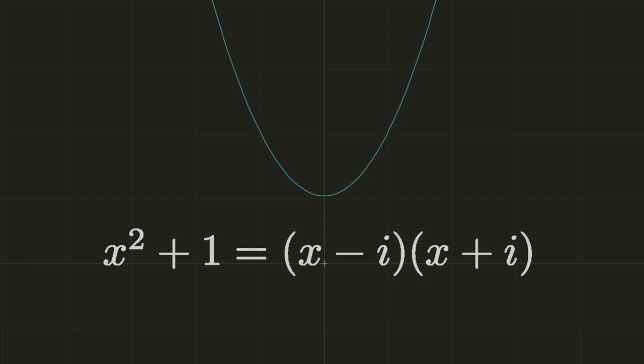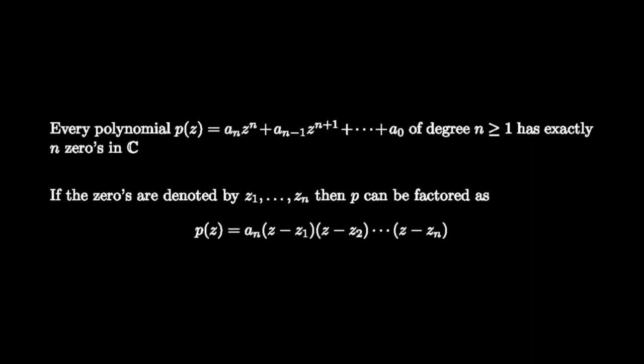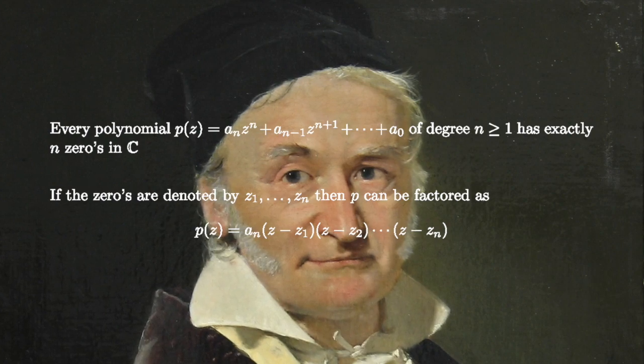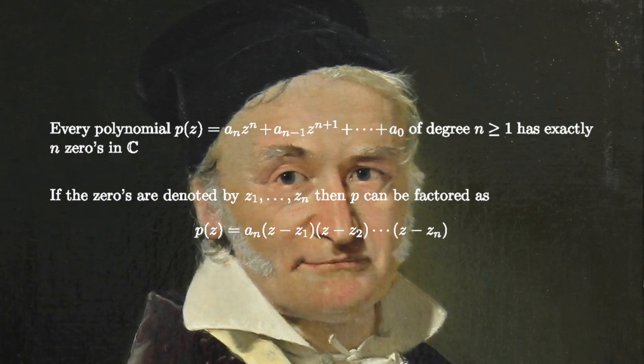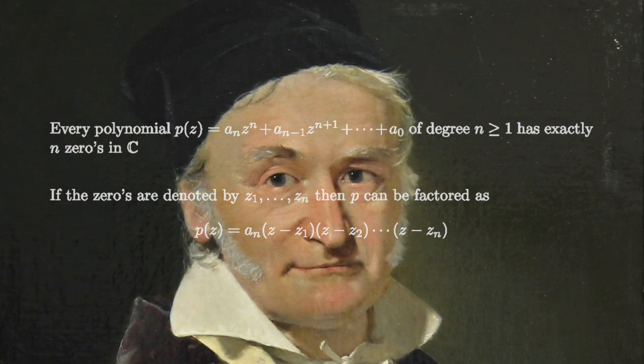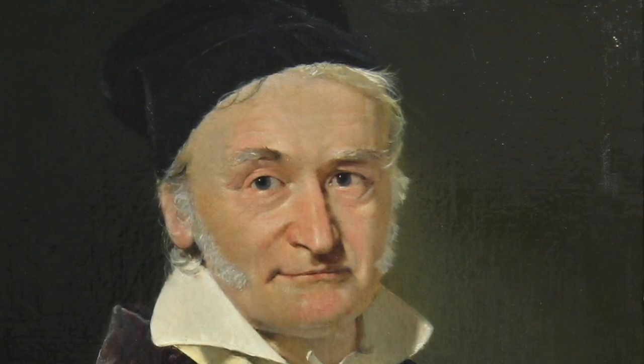This raises the question: can every polynomial be factored in terms of real and imaginary numbers alone? It turns out that the answer is yes. This is the statement of the fundamental theorem of algebra, first proven by Gauss in 1799 when he was just 22 years old. In his life he published four different proofs of this fact, which gives you a sense of how important he considered it to be. At the end of this video, I'm going to show you a beautiful and simple proof of this incredible fact.